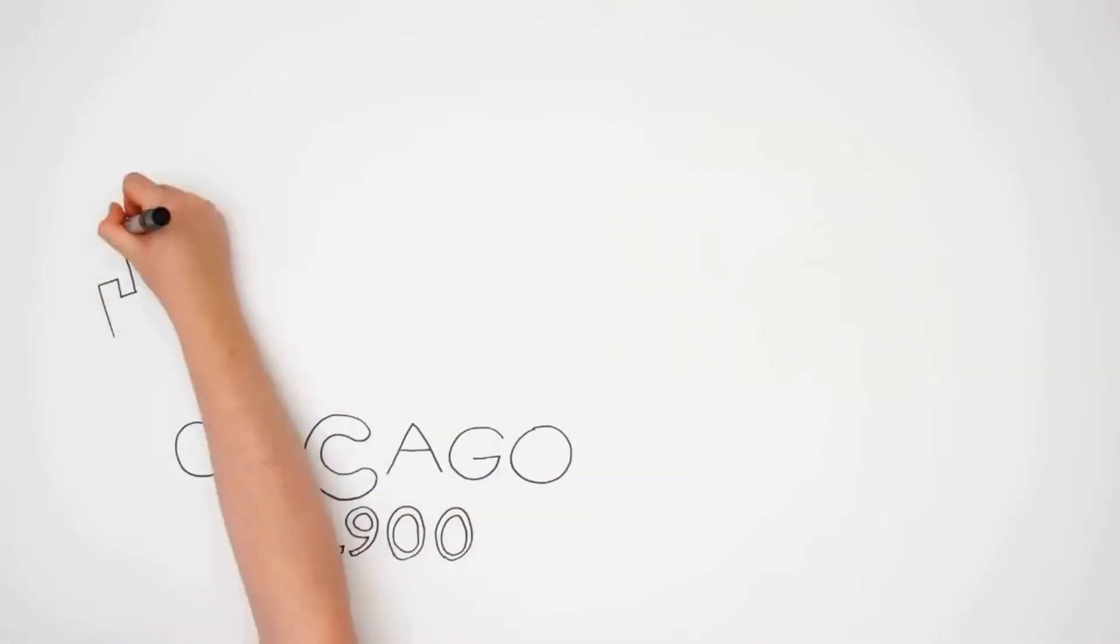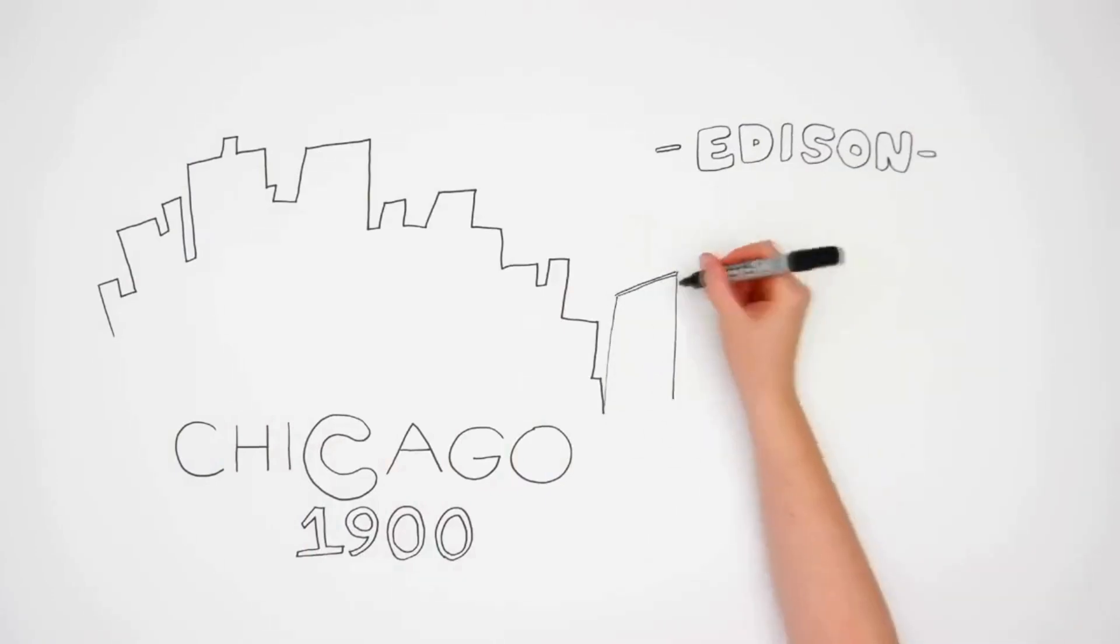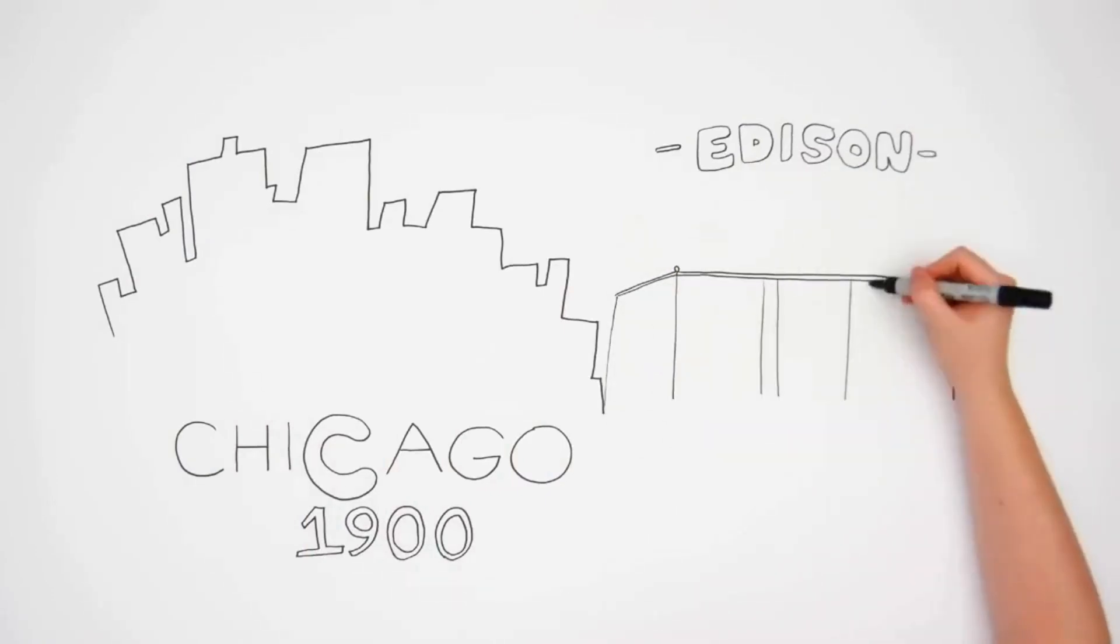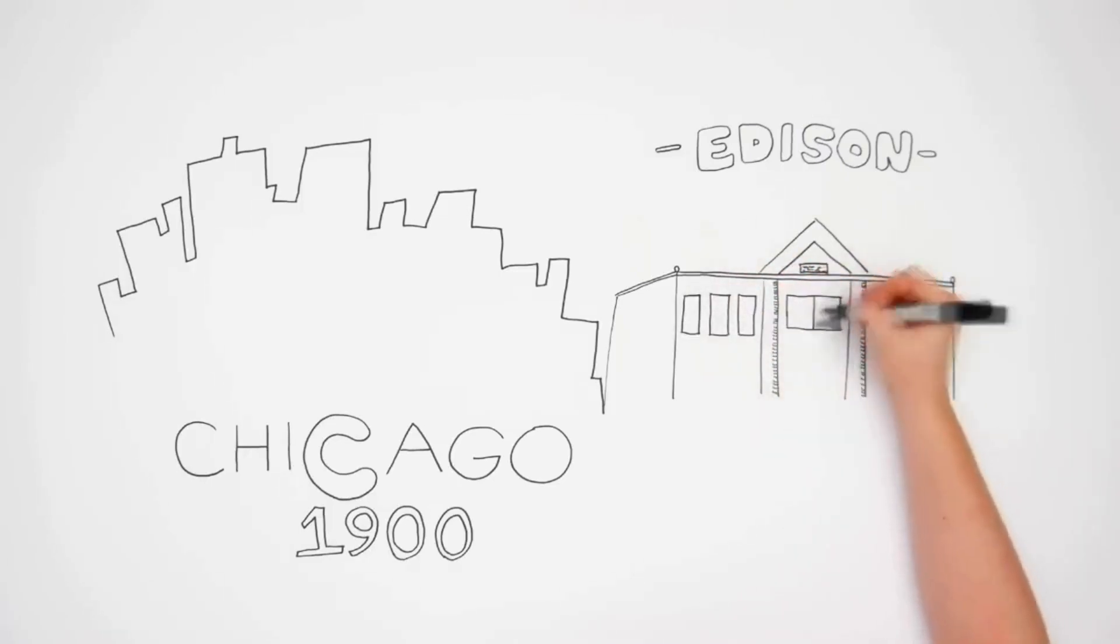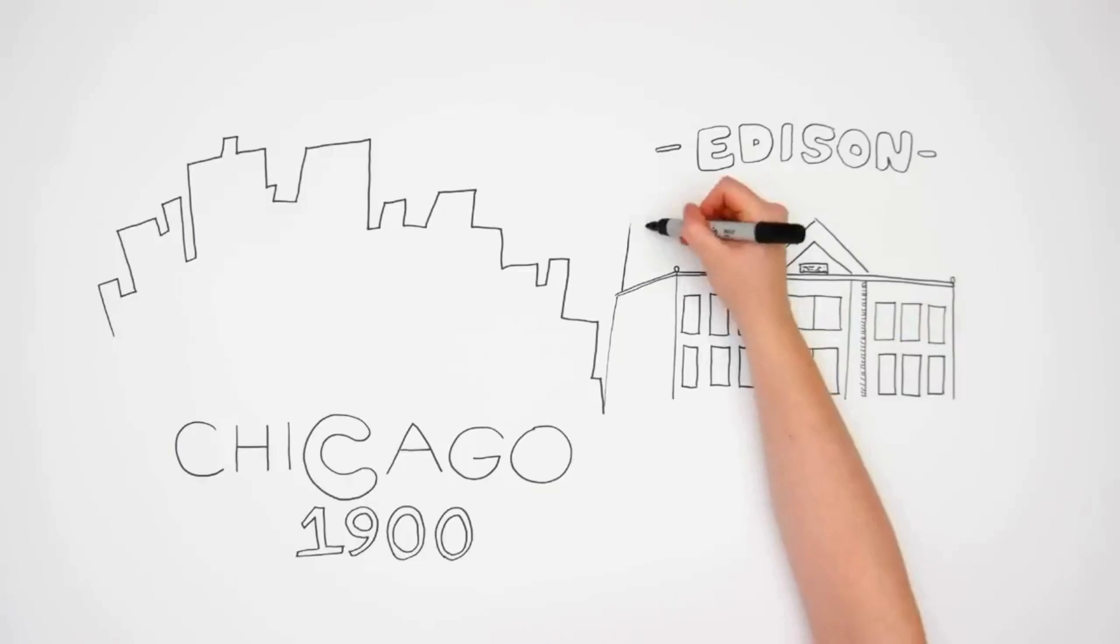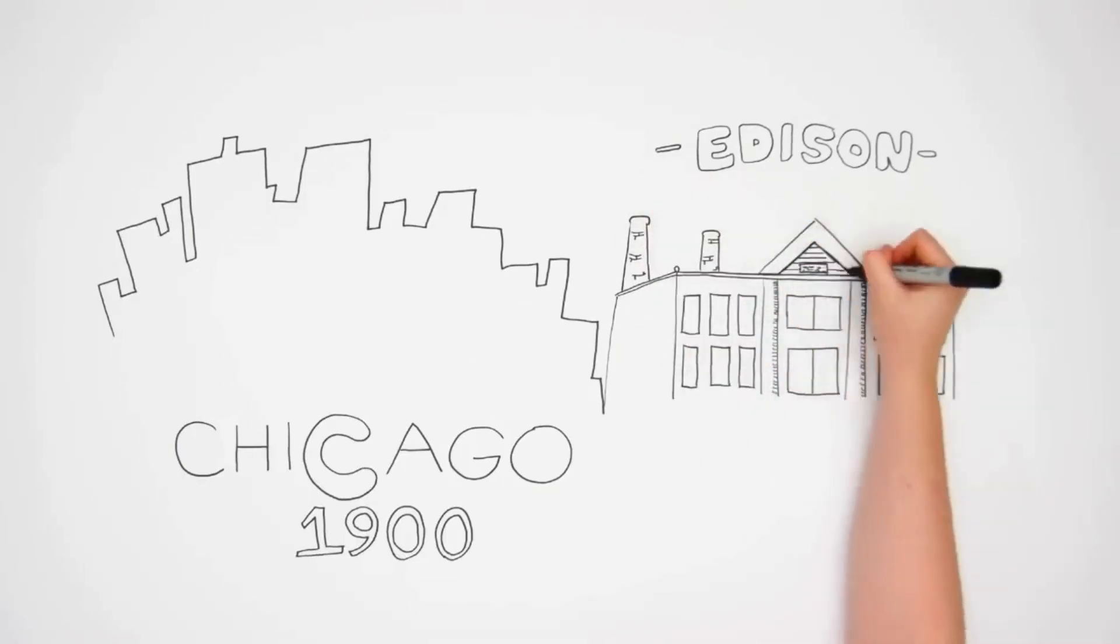Chicago 1900, the Edison Power Company developed the turbine power station, which could generate and distribute large-scale power to business. This provided cheaper, more reliable and cleaner power than any factory or business-based generator, without many of the headaches.